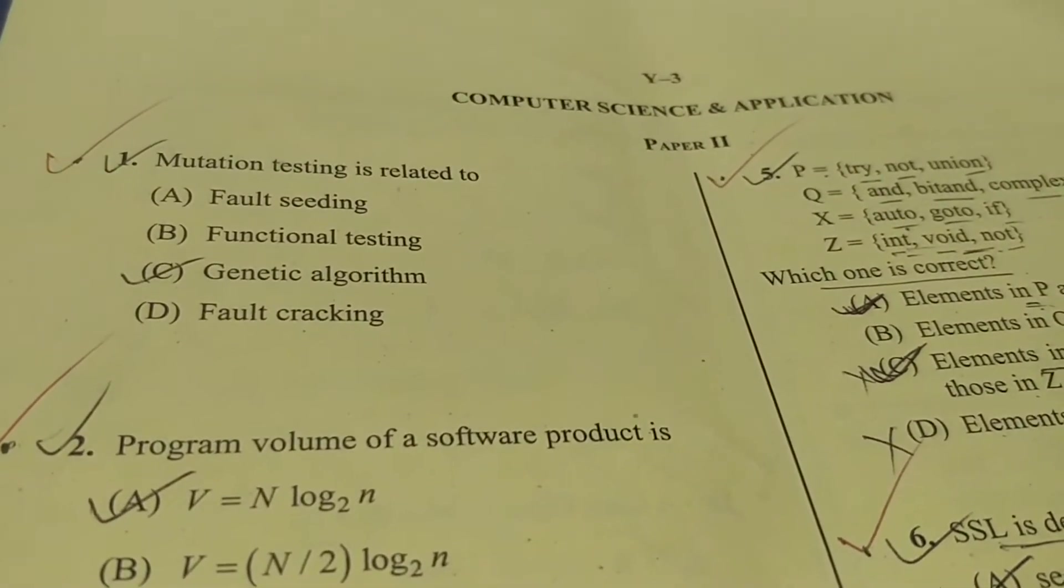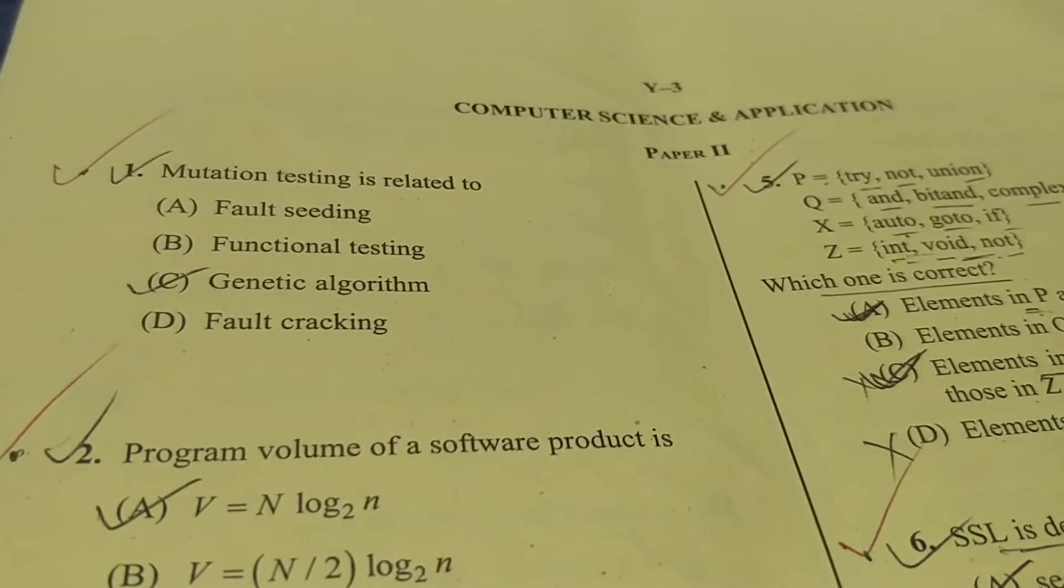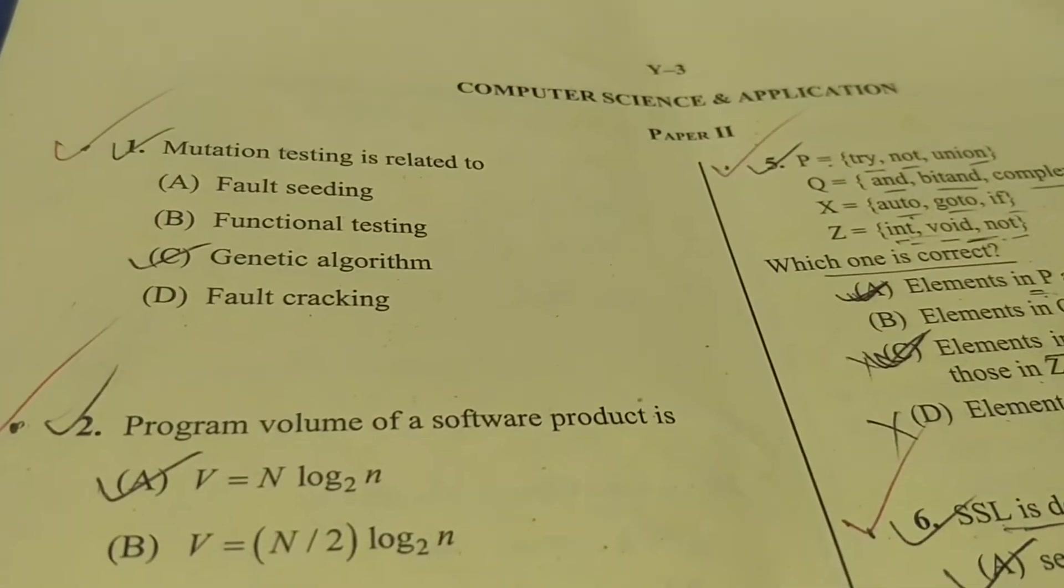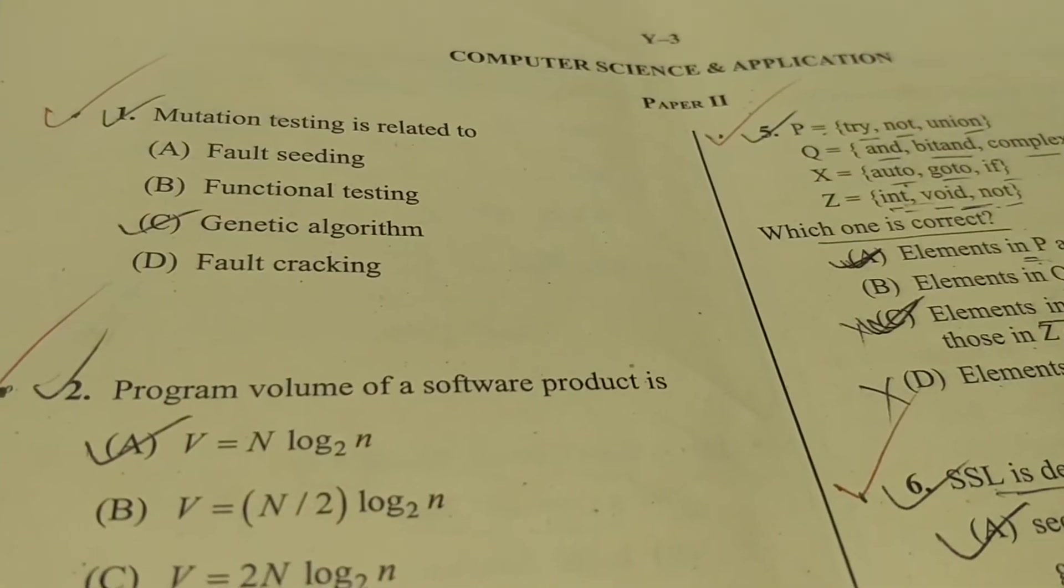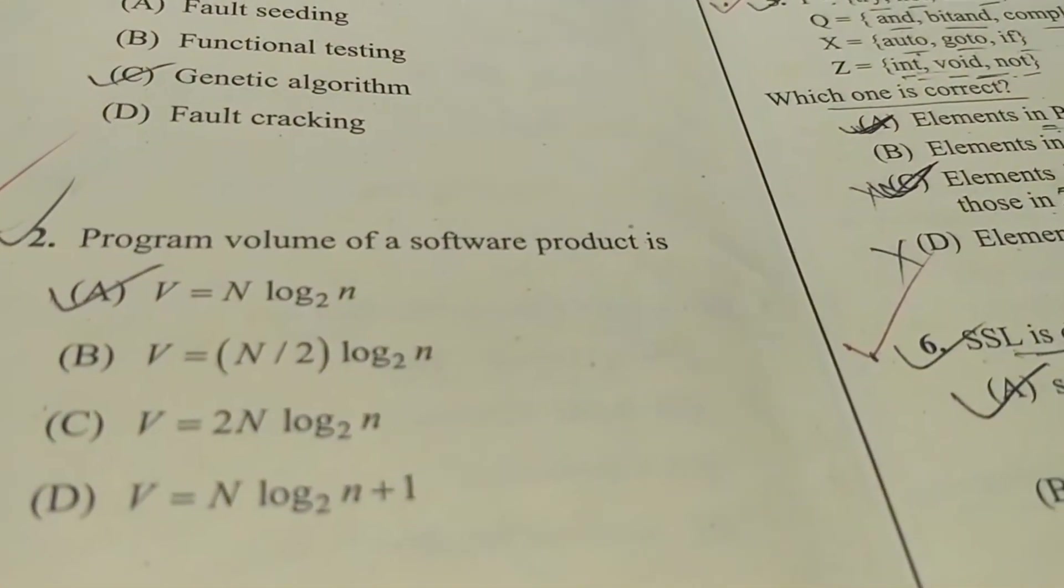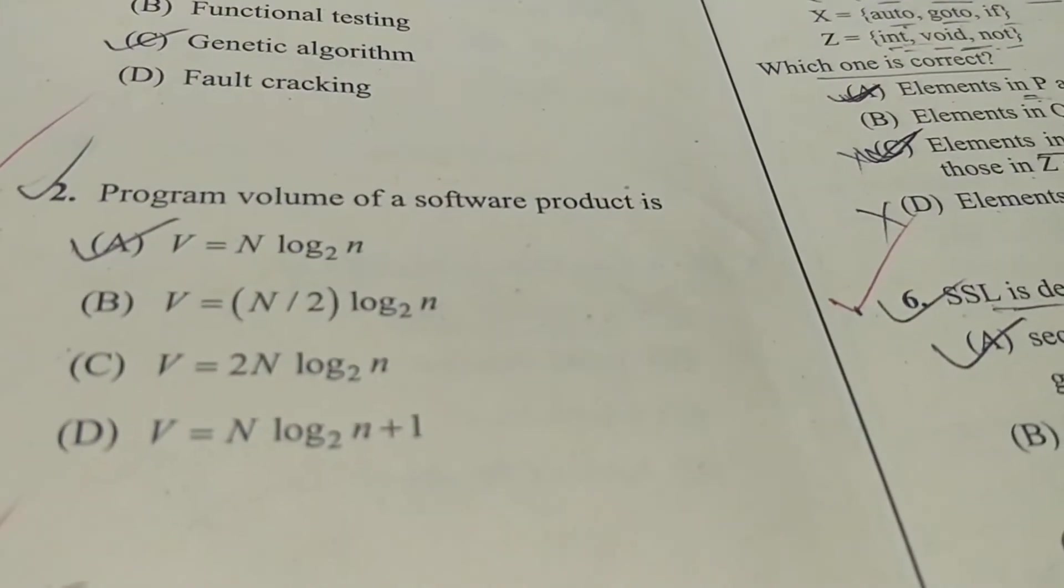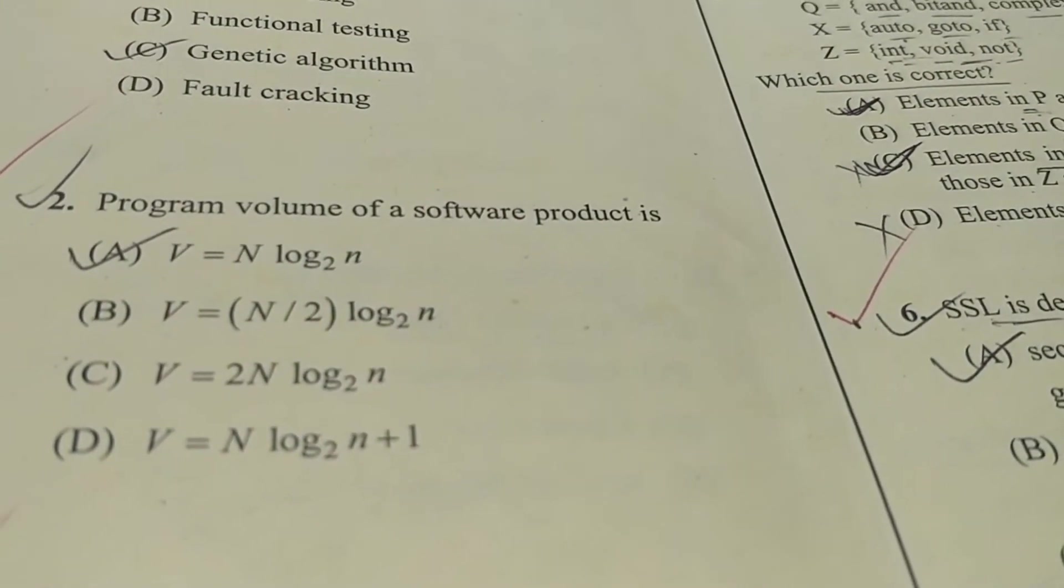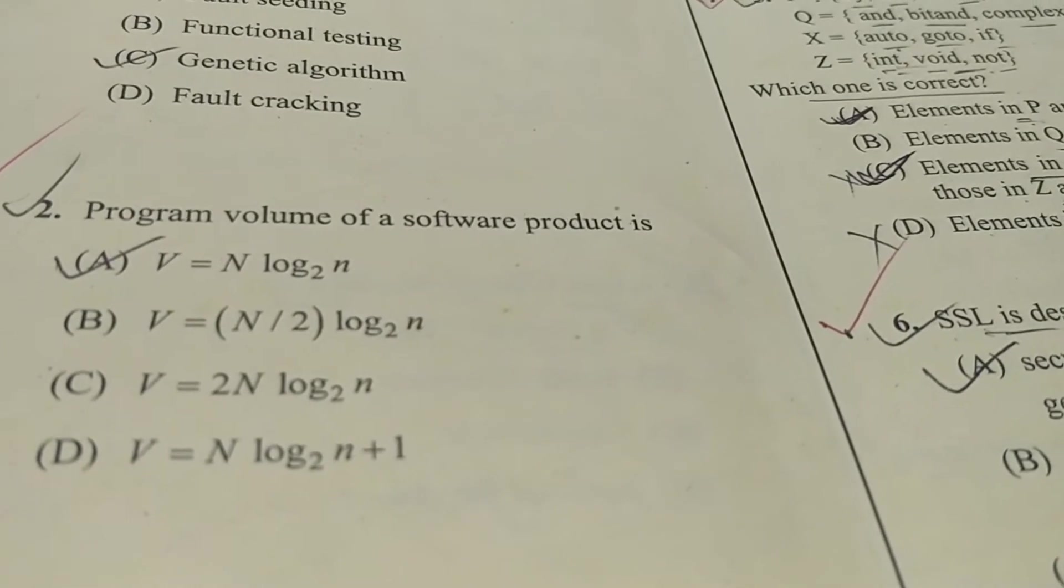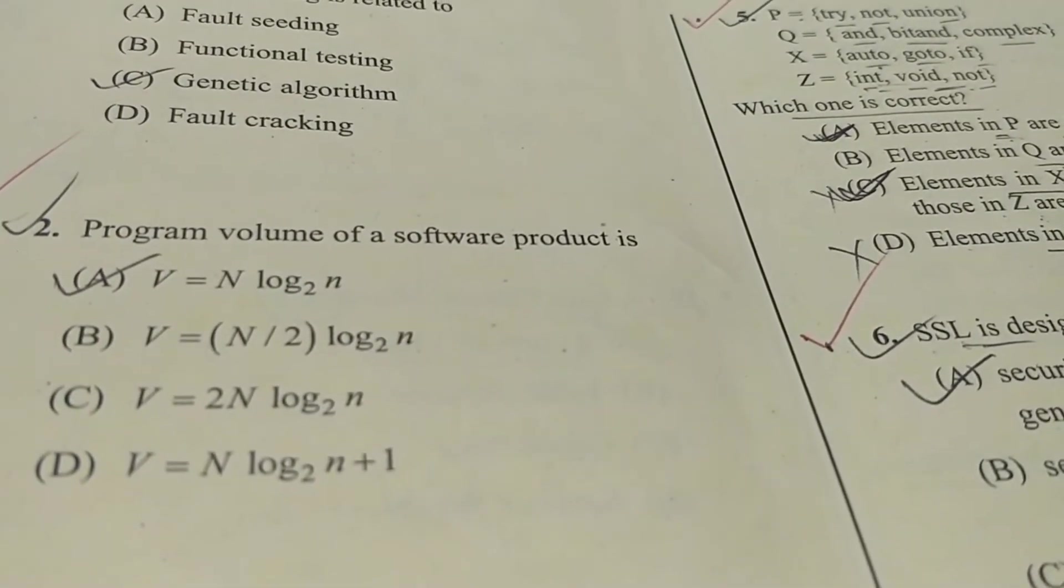Now question number one: mutation testing is related to - the answer is genetic algorithm. So the correct answer is C. And the second question: program volume of a software product is related to Halstead software engineering. So option A is correct where V equals N log N.